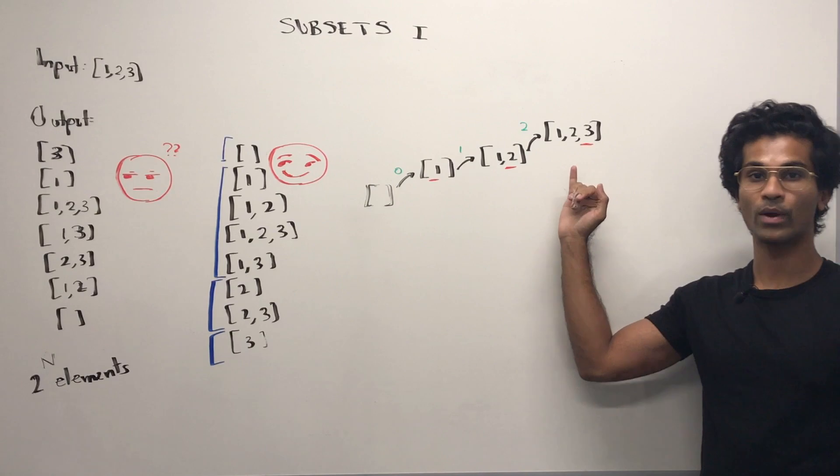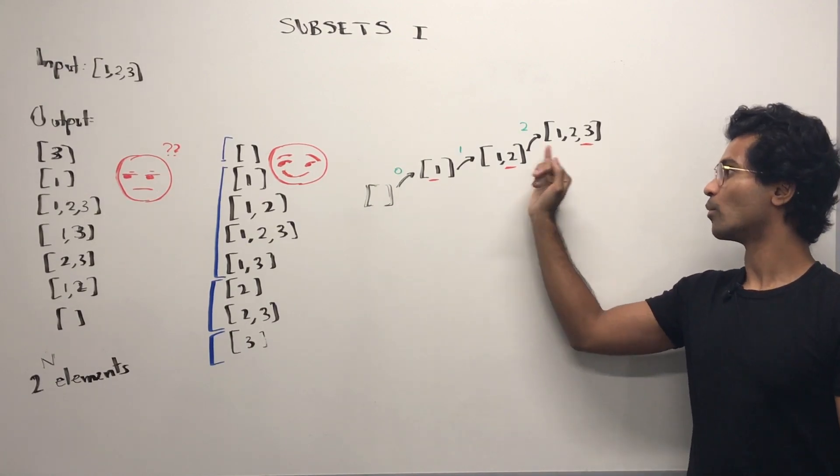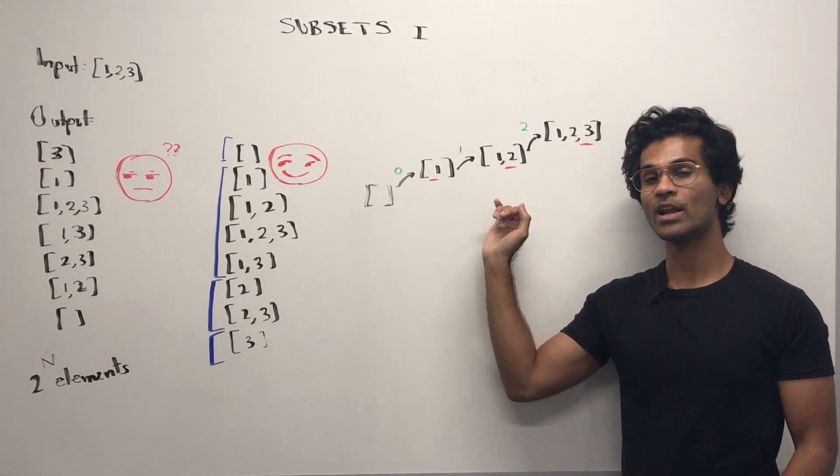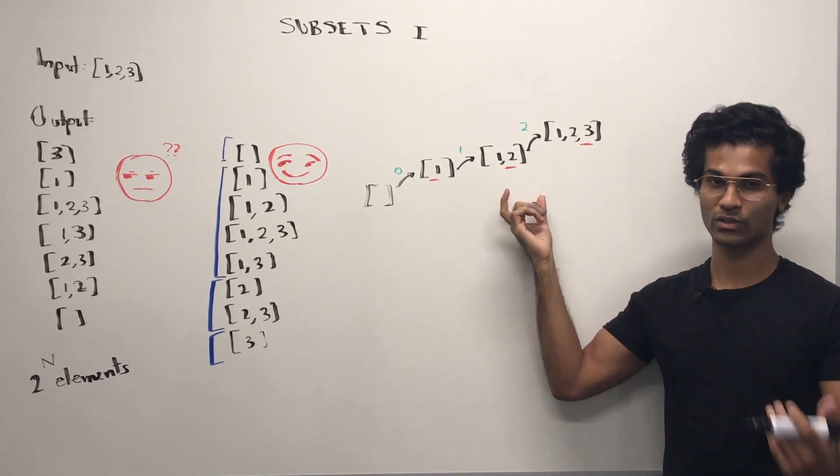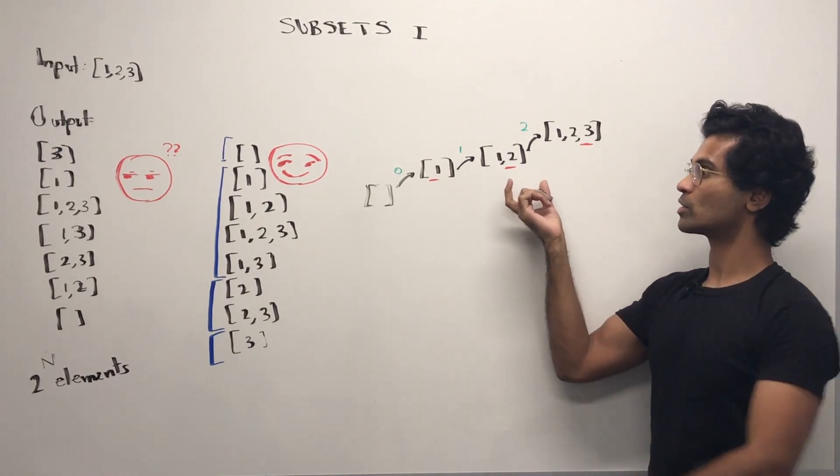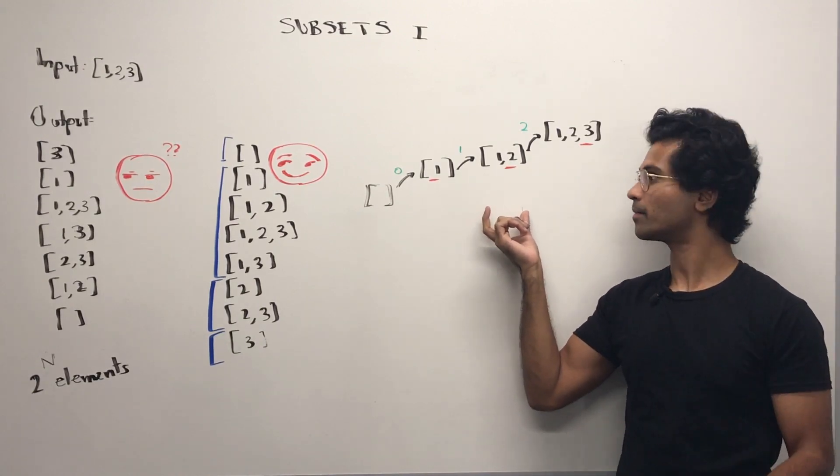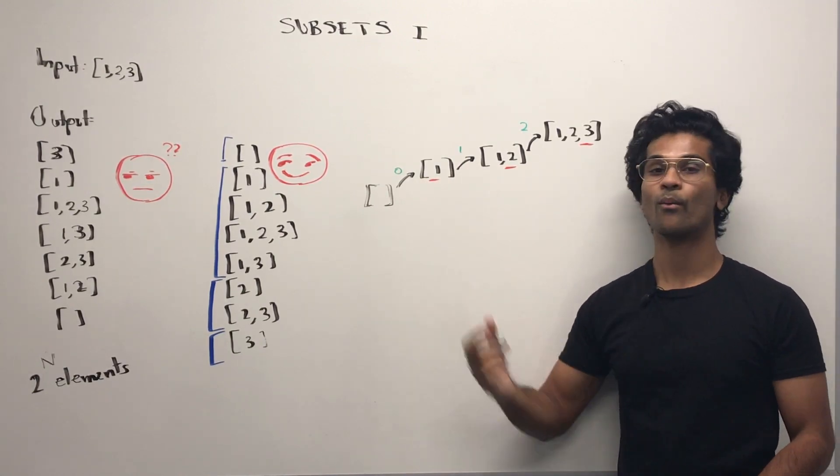So first, if we take away three, we'll go back to one comma two. Can we add anything to this so that it's unique or it's new? We're out of numbers, so we can't do that. We have to go back one more. So now we're at one.